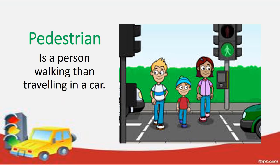What does a pedestrian mean? A pedestrian is a person that is walking rather than travelling in a car. Look at the three children. Are they being careful on the road? They are looking left, right and left.